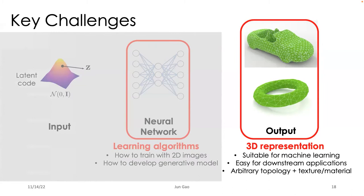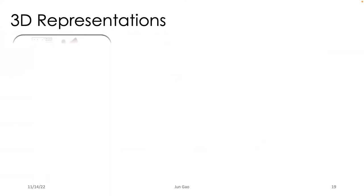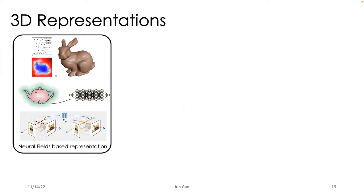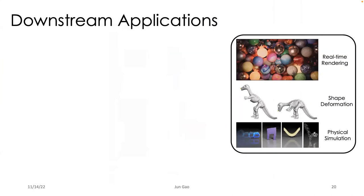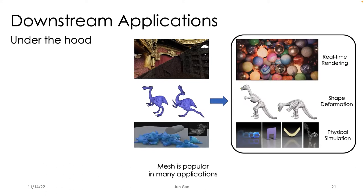Let's first focus on the 3D representation part. In recent years, neural field-based representations have achieved very promising progress — deep SDF, occupancy networks, or NeRF. They are suitable for machine learning with a continuous definition in the 3D field, and can represent objects with complex geometry and allow topological changes. On the other side, let's look at representative downstream applications such as real-time rendering, shape deformation, or physical simulation — they are widely used in graphics domains.